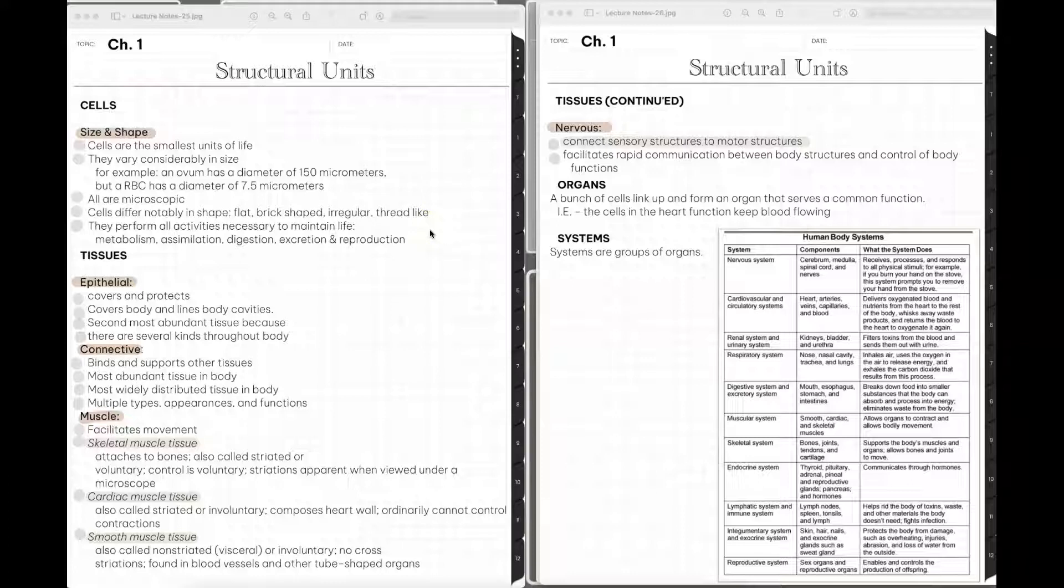If you wanted to differentiate cell types, you would definitely need a microscope to do so. They also differ notably in shape. There are flat cells, brick shaped cells, irregular shaped cells, thread-like cells. There's a bunch of different shapes of cells. And they all perform activities necessary to maintain life, things like metabolism and assimilation, digestion, excretion, and reproduction.